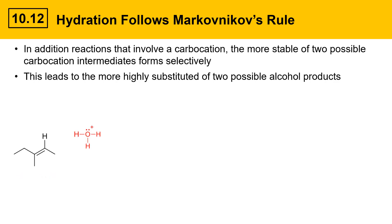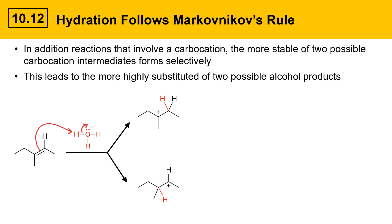Here's an example with a differentially substituted alkene: the left carbon contains two carbon groups, while the right carbon contains only one carbon group and a hydrogen. When protonated, one option puts H on the less substituted carbon, giving a carbocation on the more substituted carbon — a tertiary carbocation. The other option gives a carbocation on the less substituted carbon — a secondary carbocation. Since tertiary is far more stable than secondary, it forms preferentially; we don't get any of the secondary carbocation.